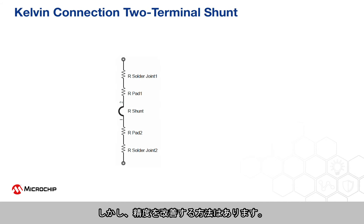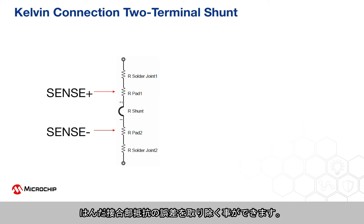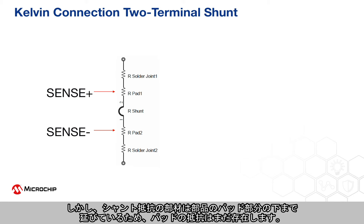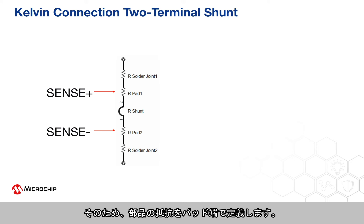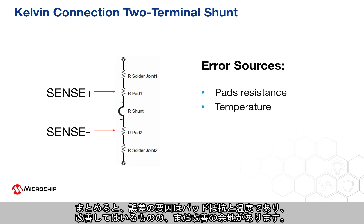There is, however, a way to improve the accuracy. This is called Kelvin connection, and it taps into the inner bottom edge of a shunt terminal. The solder joint resistance error is eliminated. However, the pad resistance is still present because the shunt material extends under the pad area of the component — the actual resistance of the physical component is defined at the extremities of the pads. It is also highly susceptible to assembly position errors, as the component will float unevenly on the solder pads. In summary, the error sources are pad resistance and temperature — a big improvement from before, but there is room for more.